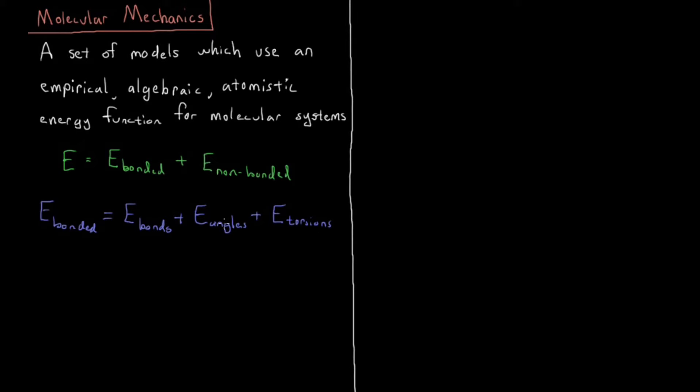And all of these elements are things that have to be specified in the state of the system. So you have to specify what your bonds, angles, and torsions are in your molecular state.